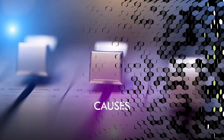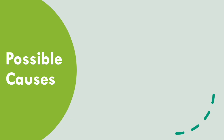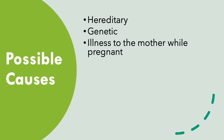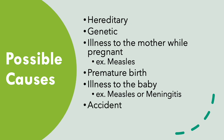Time for the causes. Possible causes of hearing impairments include hereditary or genetic factors, illness to the mother while pregnant such as measles, premature birth, illness to the baby such as measles or meningitis, an accident, and also the possibility of side effects from medications.